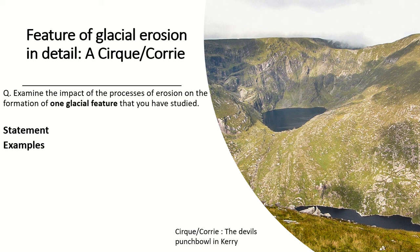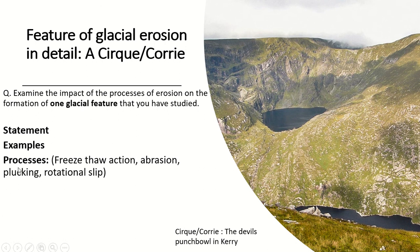Your corrie is a three-sided mountain hollow — there's a side here, a back, and a side here — with a hollow containing a lake. This lake is called a tarn. We must now refer to the processes: freeze-thaw action, abrasion, plucking, and then rotational slip at the end. You must also draw a diagram.